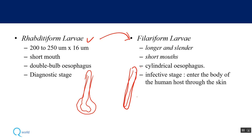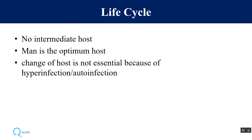The rhabditiform larva is the diagnostic stage — it is what you can see in the stool — while the filariform larva is the infective stage, the form which enters the human body. There is no intermediate host; there is only one host, which is the human being.